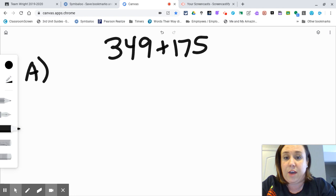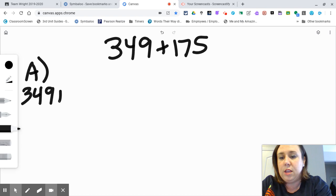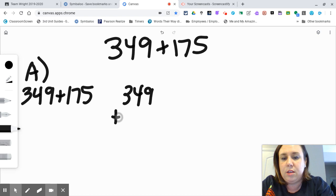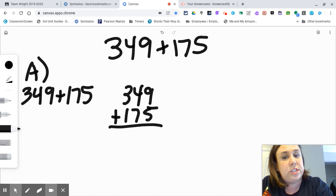I can either do this vertically or horizontally and I'm doing the same thing, so I'm going to do both just so you see what it looks like. I can start with the hundreds, tens, or ones—it doesn't matter.